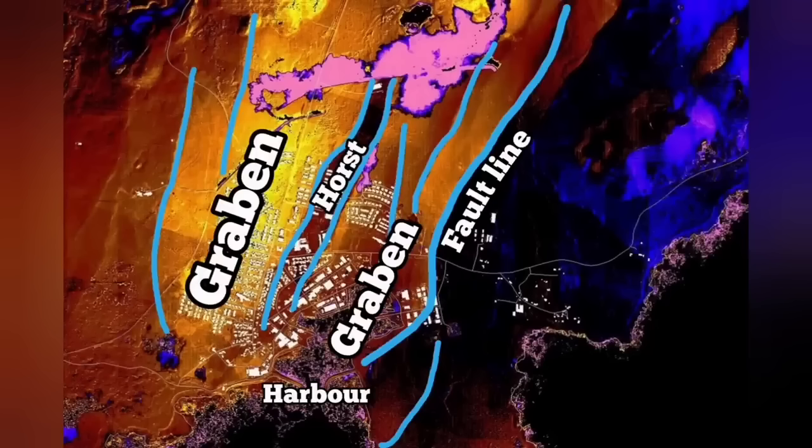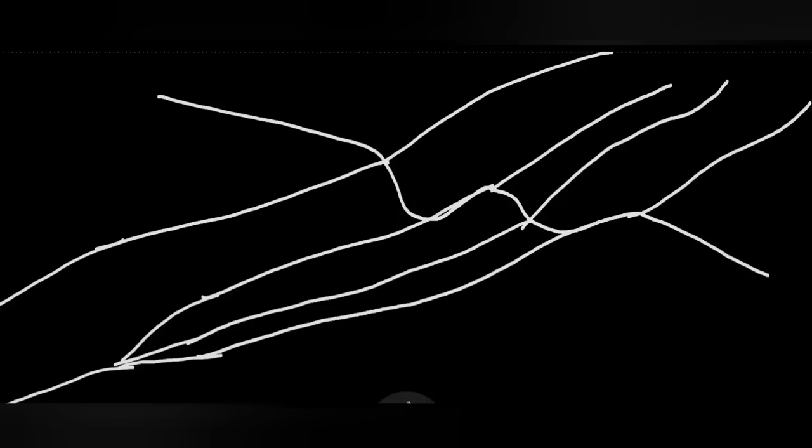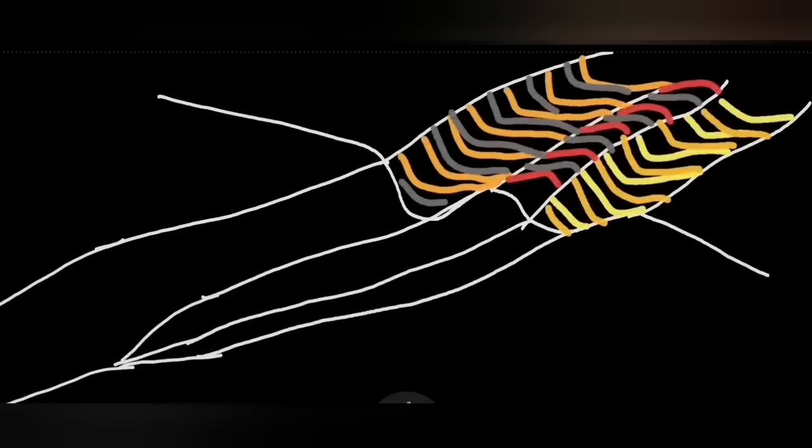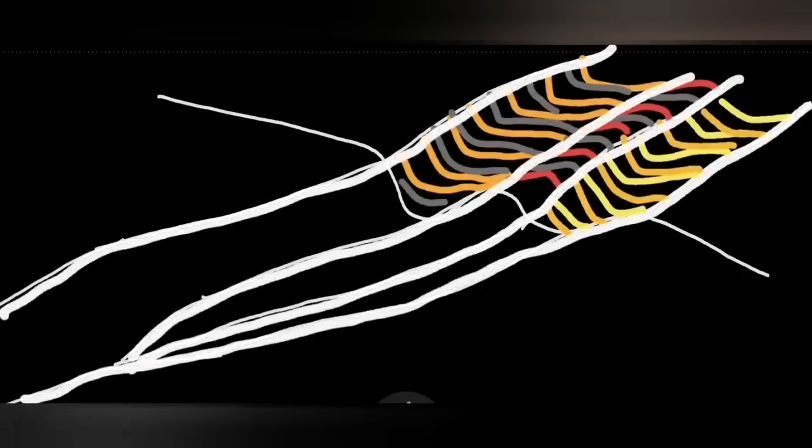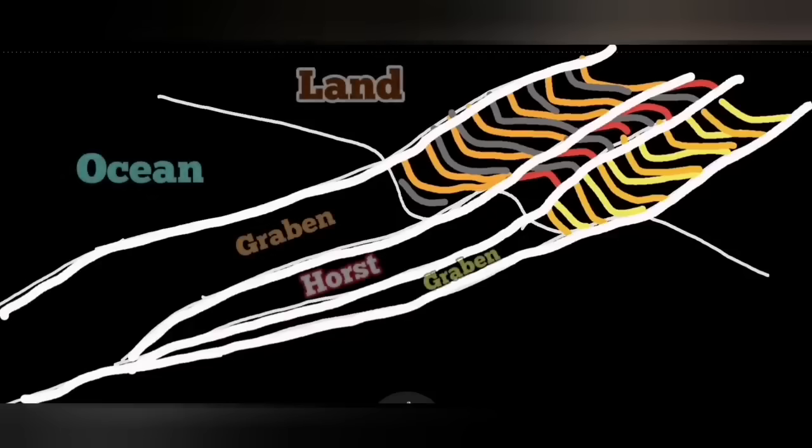This is now going to change it seems. Off the shore of Grindavik, in the harbor and toward the ocean, we have the continuation of this horst and graben. This is practically a rift, a rift valley.